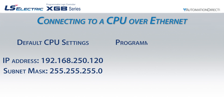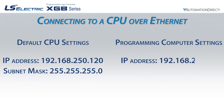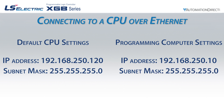To allow our programming computer to connect for the first time with the CPU, we will set the computer to an IP address of 192.168.250.10, and a subnet mask of 255.255.255.0.